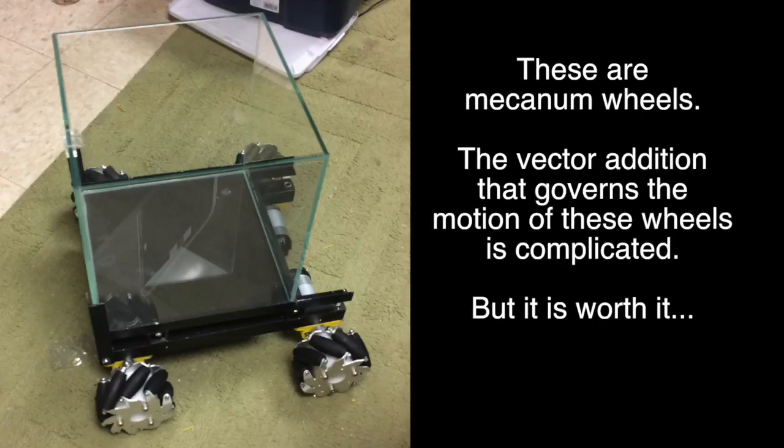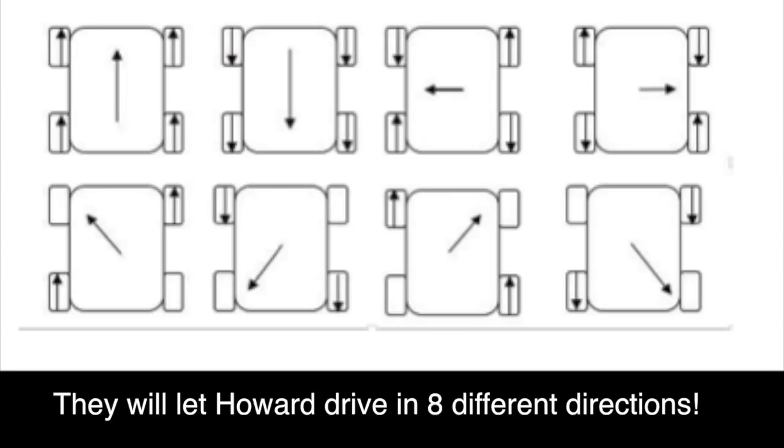These are mecanum wheels. The vector addition that governs the motion of these wheels is complicated, but it is worth it. They will let Howard drive in eight different directions.